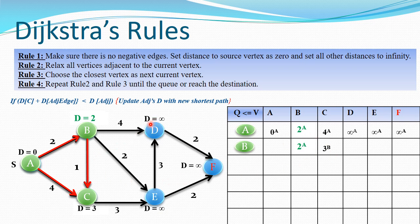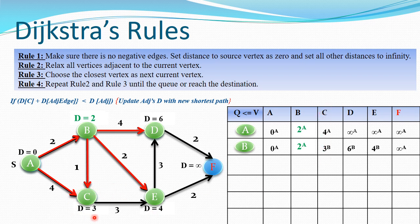B also has adjacent vertices D and E. For D: 2 plus 4 is 6, which is less than infinity, so we update D to 6. For E: 2 plus 2 is 4, also less than infinity, so we update E to 4. After this iteration, we have C at 3, D at 6, and E at 4. Choosing the next smallest unvisited value, 3 belongs to C, so C becomes our next current vertex.